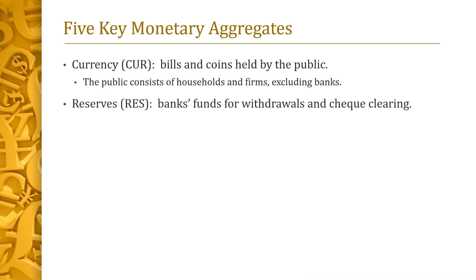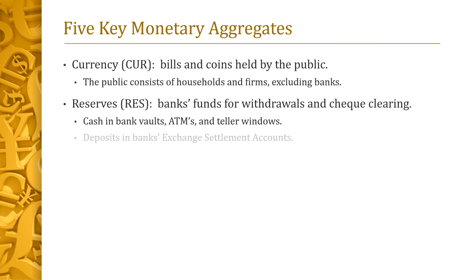The second aggregate is banks' reserves, abbreviated RES. Reserves consist of funds that banks maintain in order to service withdrawals and to clear checks. Reserves have two components: cash that the bank keeps in its vaults, ATMs, and teller windows; and the balance of the bank's exchange settlement account — a special account maintained by the bank at the RBA that is used to clear checks drawn on the bank.